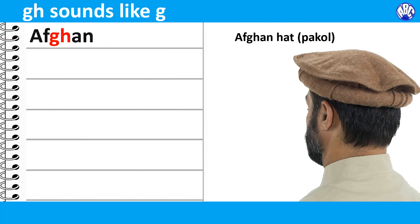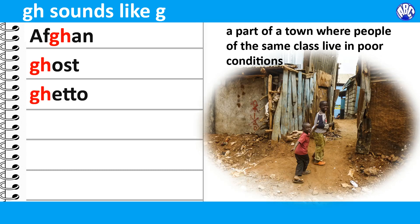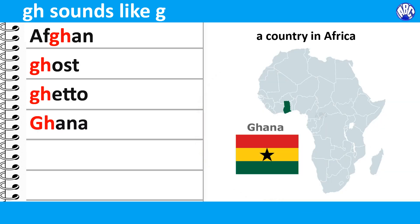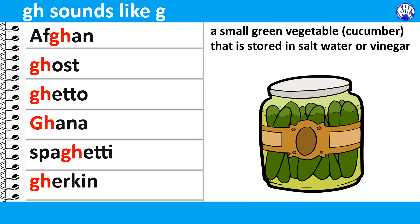G.H. sounds like G in the following words: Afghan, Ghost, Ghetto, Ghana, Spaghetti, Gherkin.